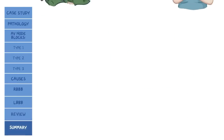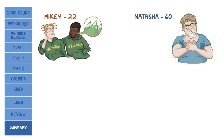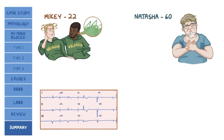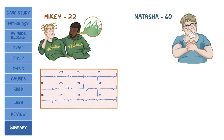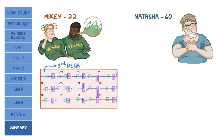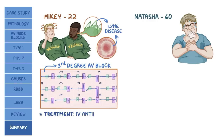Back to our cases. Mikey is presenting with syncope, so let's take a look at his ECG. We see that there is no relationship between the P waves and the QRS complexes — each one is appearing at their own rate. This indicates a third degree AV block. Considering he recently went on a hiking trip in Vermont and has a bullseye rash, it's likely that the cause of his AV block is Lyme disease. Mikey was treated with intravenous antibiotics and is now off planning his next hike.